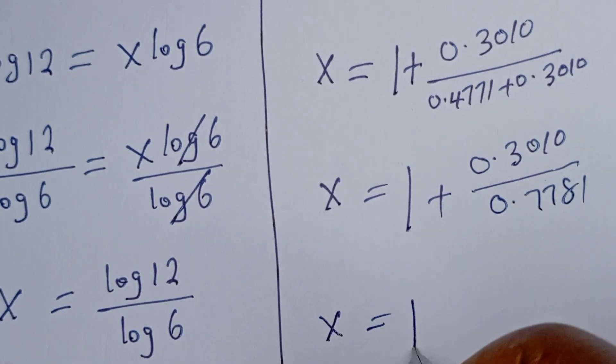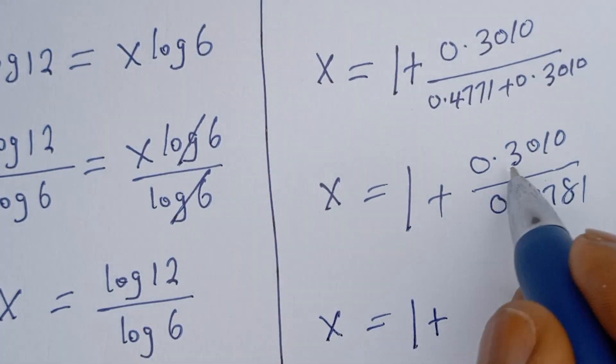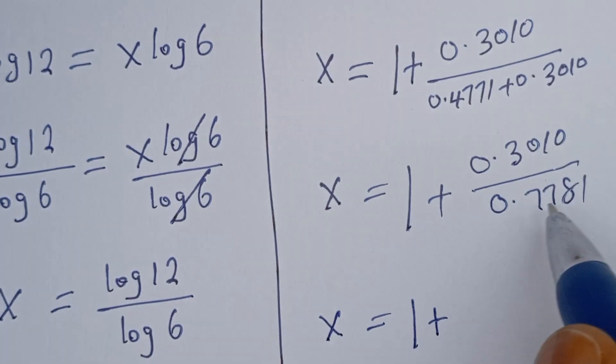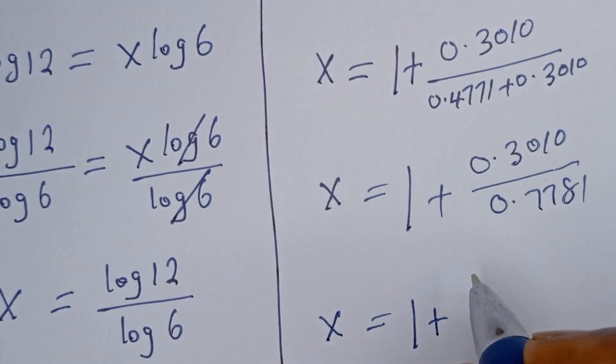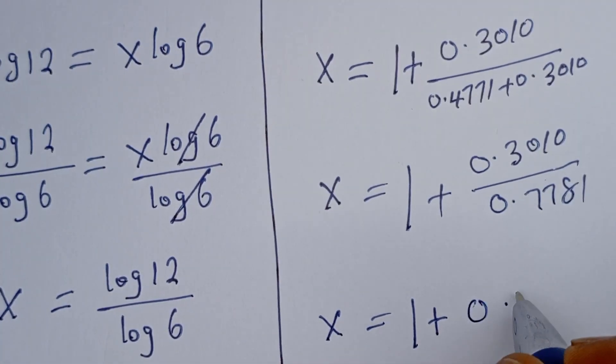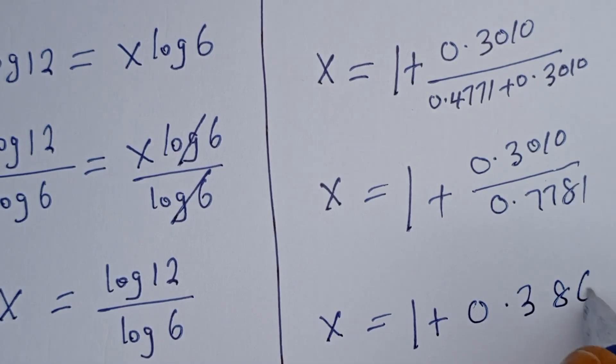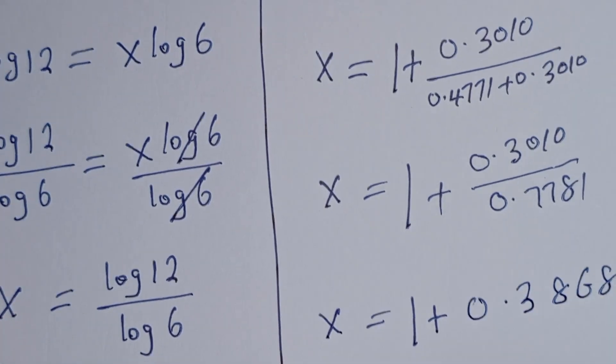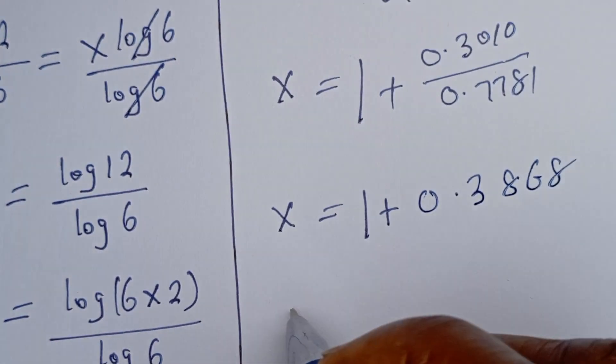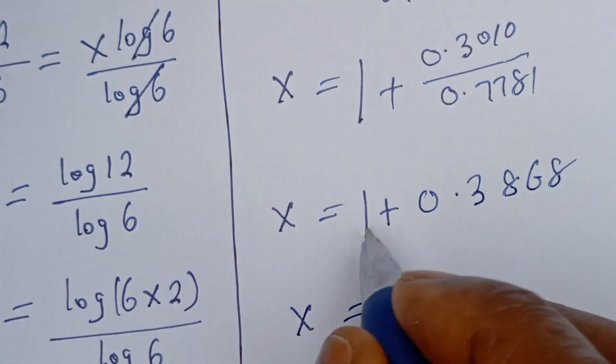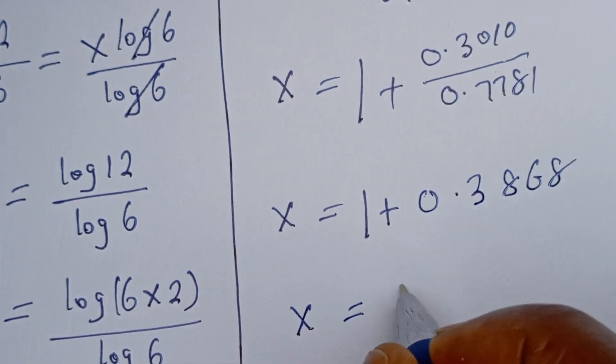Then x is equal to 1 plus 0.3010 divided by 0.7781, that is 0.3868. If you add these two together, we have 1.3868.